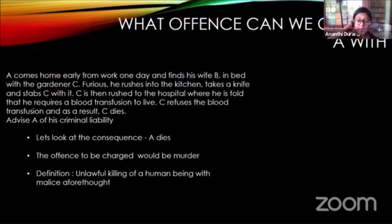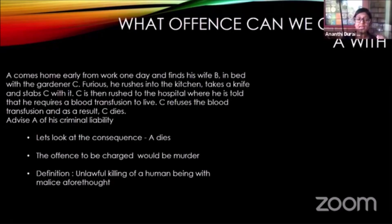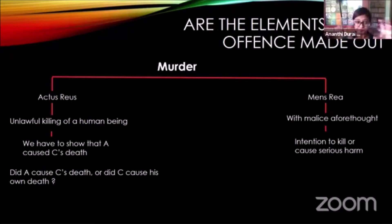Because C has died, the consequence is death, and therefore A will be charged with the offence of murder. Murder is one of the very few offences not defined by any Act of Parliament — it was a definition given by a judge in the 17th or 18th century that we still use today. In a very simple definition: murder is the unlawful killing of a human being with malice aforethought. That definition is divided into actus reus — unlawful killing of a human being — and mens rea — an intention to kill or an intention to cause serious harm.